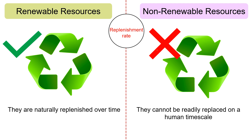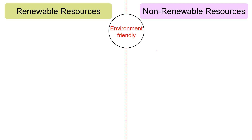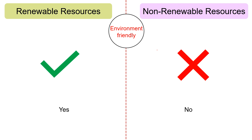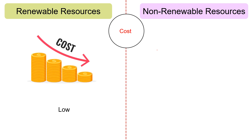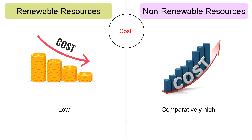Non-renewable resources are formed over geological time through processes like fossilization or the cooling and solidification of molten rock. Regarding environment: renewable resources emit less carbon compared to non-renewable resources, hence they are pollution-free and environment-friendly. Regarding cost: as renewable resources are available in abundance, they are relatively cheaper than non-renewable resources, which are costlier. However, the maintenance cost of renewable resources is higher than that of non-renewable resources.